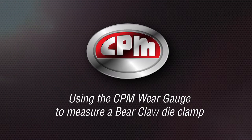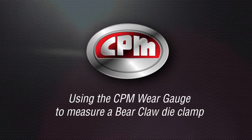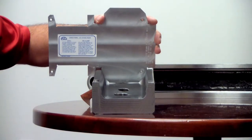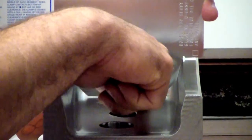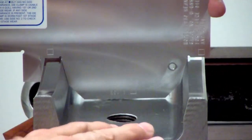This video demonstrates the proper use of the die clamp quill flange wear gauge. On the gauge are three squares, here, here, and here, right above three flat surfaces.